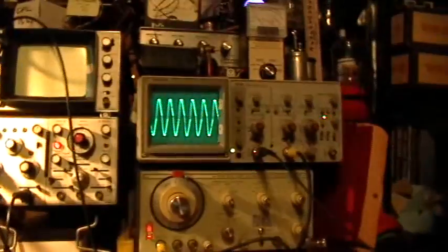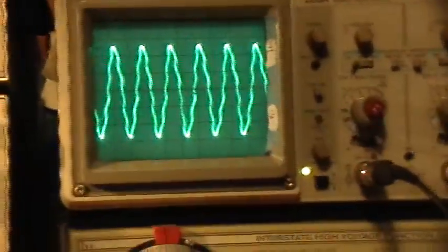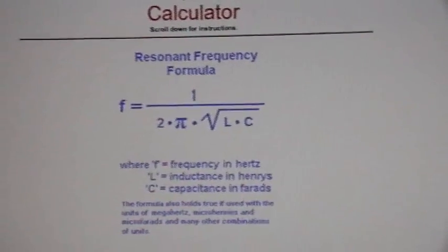So that is how you do it. That's how you find the inductance of an inductor by putting it in a tank circuit with a known capacitor, sweeping the frequency input using the function generator, reading the output, and then calculating using this formula right here. Thank you for watching.